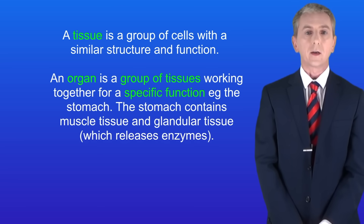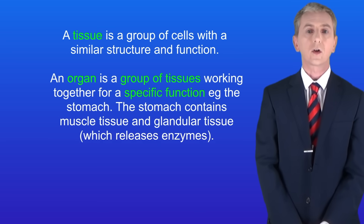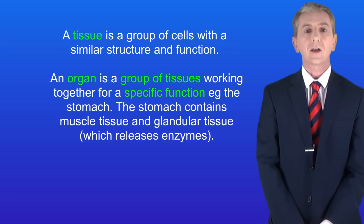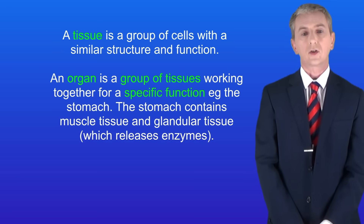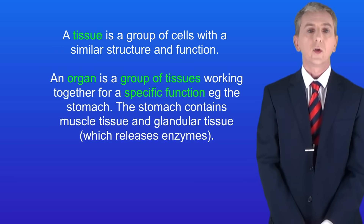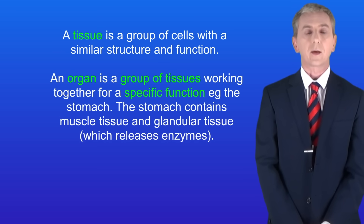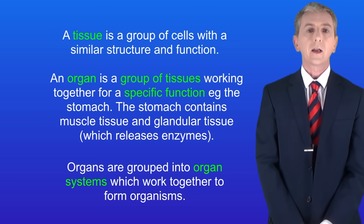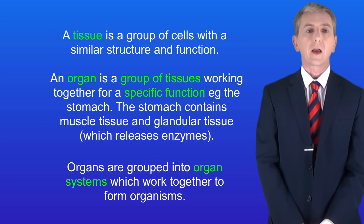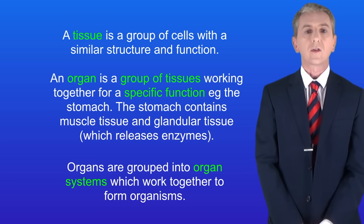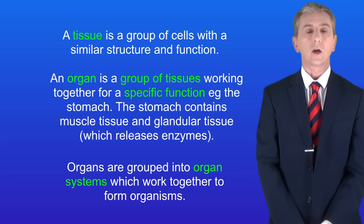An organ is a group of tissues working together for a specific function, and a good example is the stomach. This contains muscle tissue and also glandular tissue which releases enzymes. Finally, organs are grouped into organ systems which work together to form organisms. A good example of an organ system is the digestive system, which we're looking at in this video.